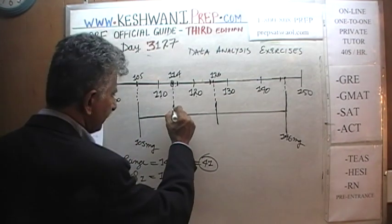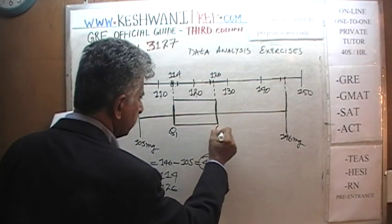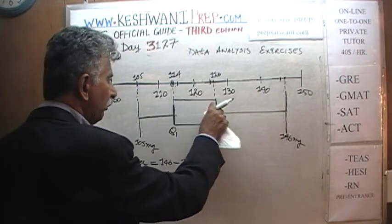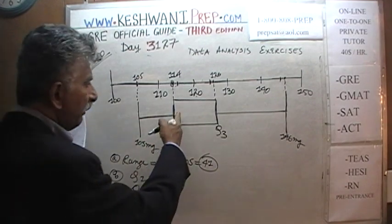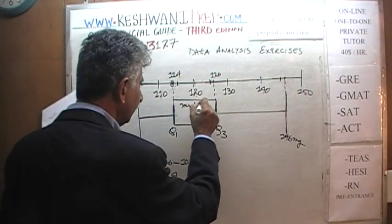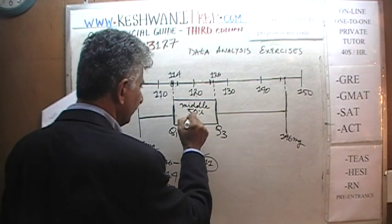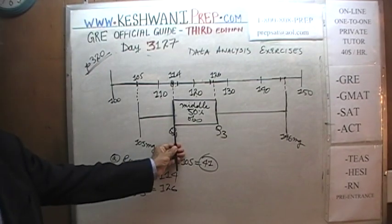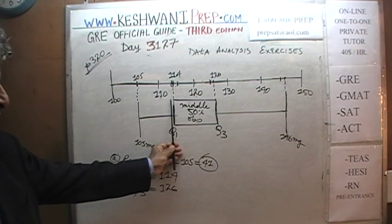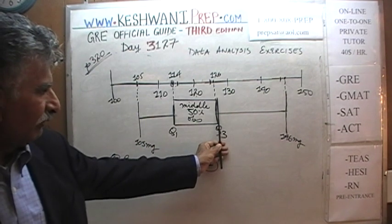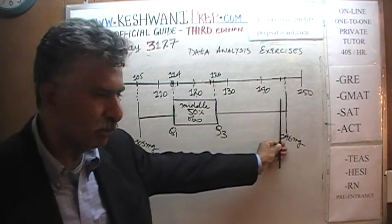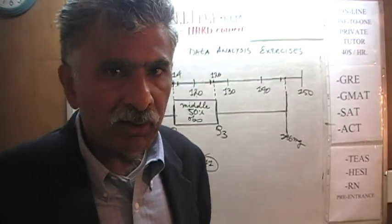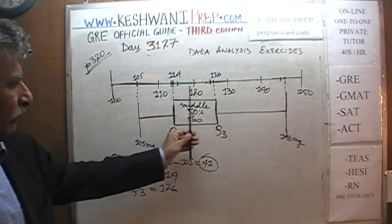We will put a box around the first quartile and the third quartile. The box in the box plot shows the middle 50% of the observations — because 25% of the time the insects weighed less than 114 milligrams, and 25% of the time they weighed more than 126 milligrams. Since we had 800 insects, 400 of them weighed between 114 and 126 milligrams.